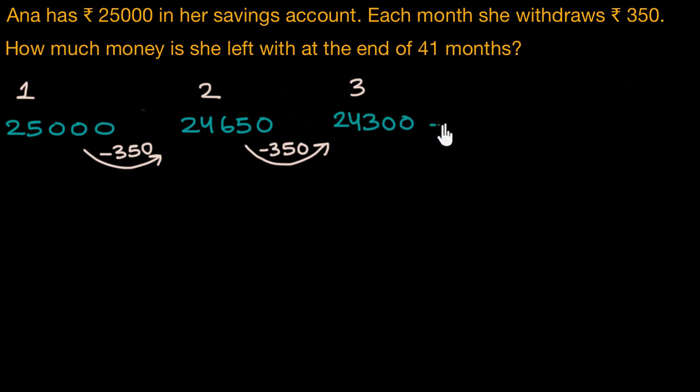And she keeps on withdrawing Rs. 350 every month, I suppose, till she has no money left in her account. And what we need to figure out is, how much money will she have in her account by the end of 41 months?